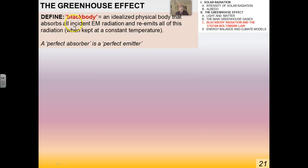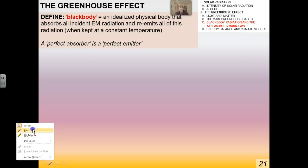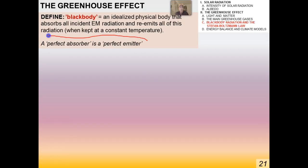Here's the formal definition of a blackbody. It doesn't really exist in reality, but we idealize it because it makes the math and physics easier. A blackbody is an idealized physical body that absorbs all incident electromagnetic radiation and re-emits all of this radiation when kept at a constant temperature. A perfect absorber is a perfect emitter — that's very important.